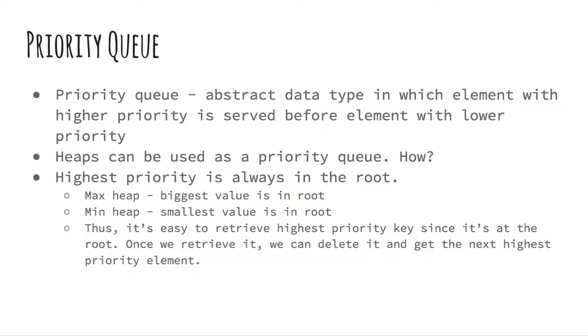A binary heap can be used as a priority queue. A priority queue is an abstract data type in which element with higher priority is served before element with lower priority.